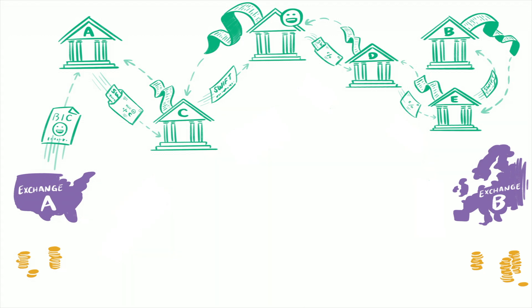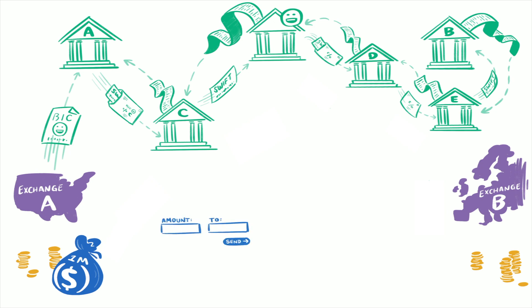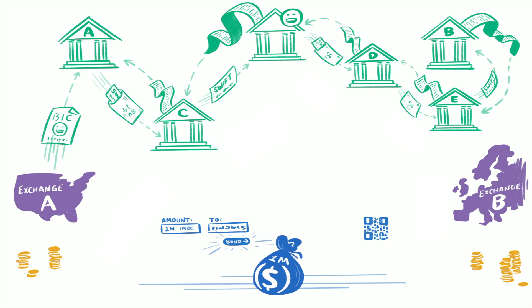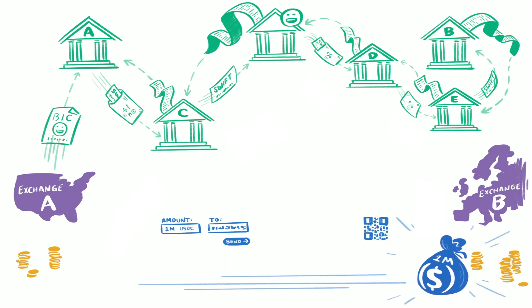Now let's try moving $1 million from Exchange A to Exchange B using USDC. You say how much you want to send, you get an address from Exchange B, press send, and the money moves within minutes — any time of day or night, on weekends or even bank holidays. That's it.